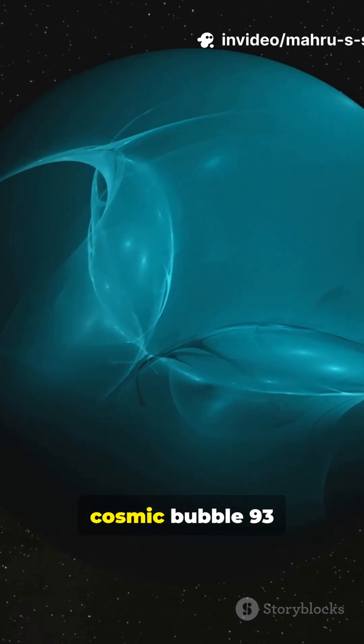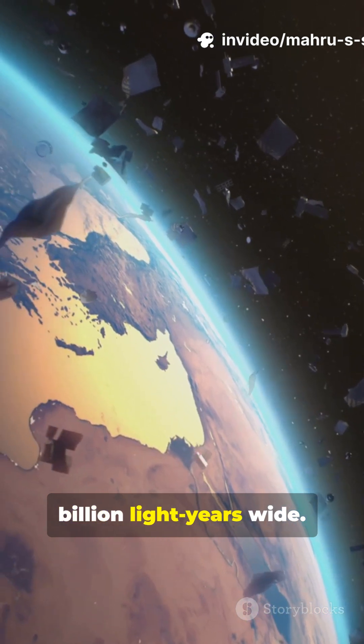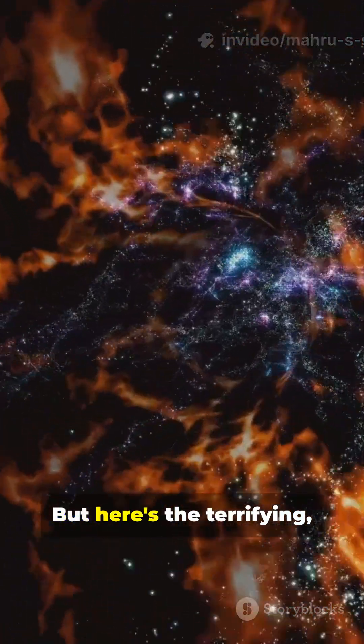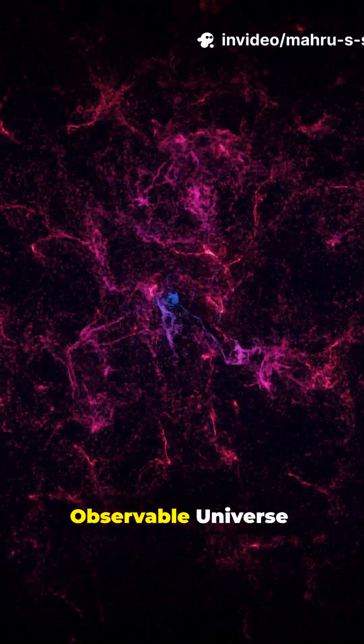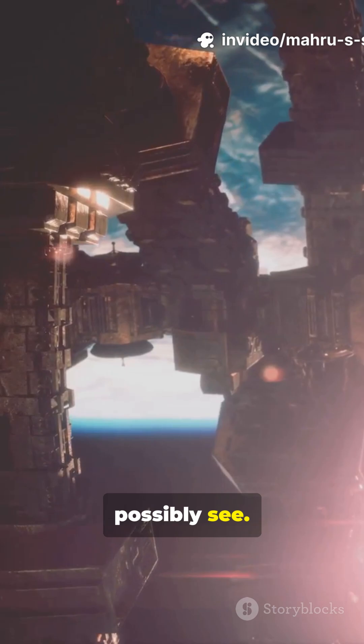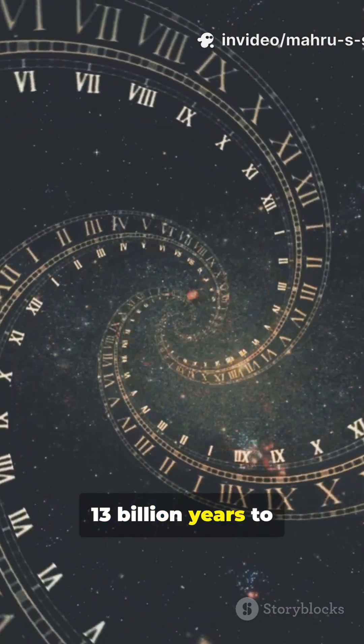We live inside a cosmic bubble 93 billion light-years wide, but here's the terrifying beautiful question: this is our observable universe, everything we can possibly see. The light from its edge has taken over 13 billion years to reach us.